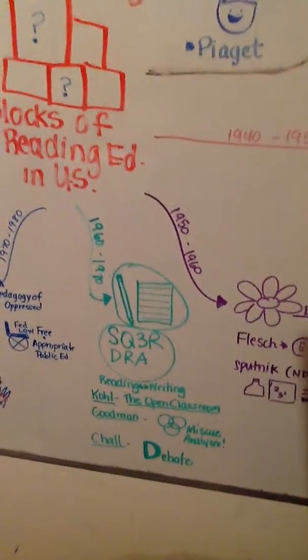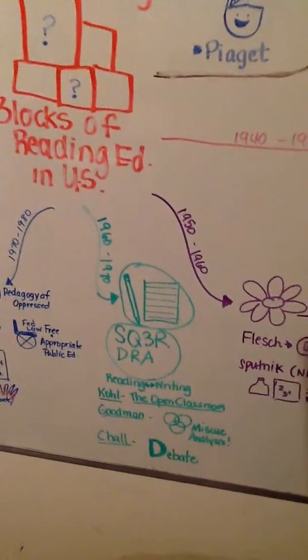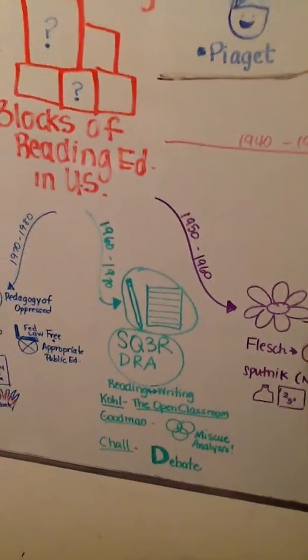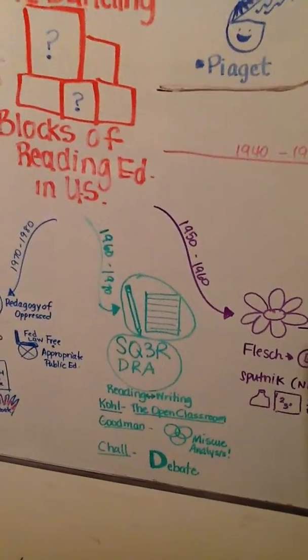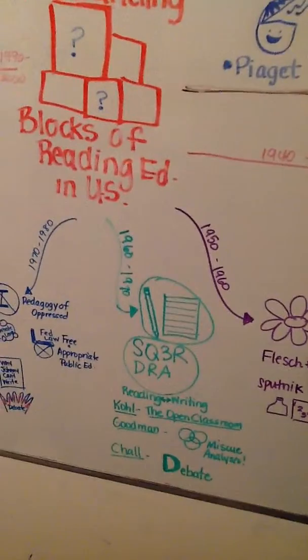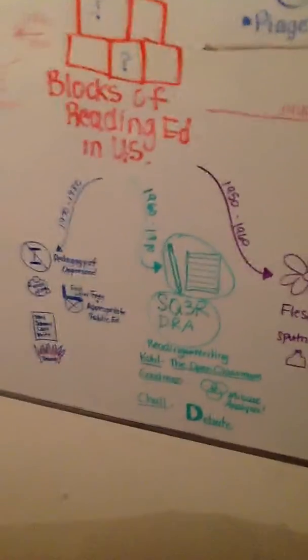Goodman came up with the miscue analysis, which is great. We still use this today in teaching because you want to make sure that children are making meaning: semantics, syntactic, and graphophonic, the grammar, the sounds, and the meaning. And you can plan your instruction from there.